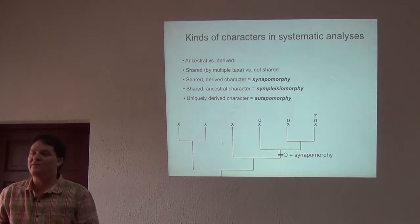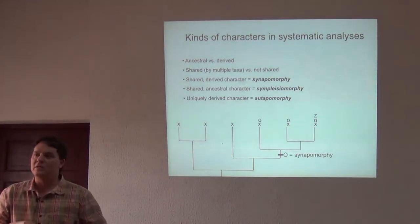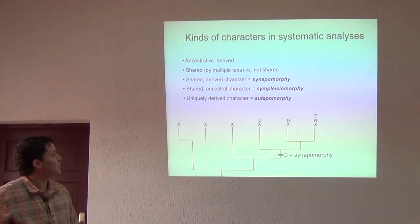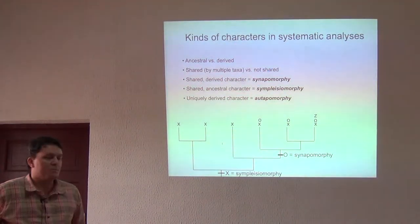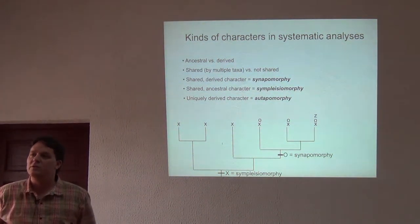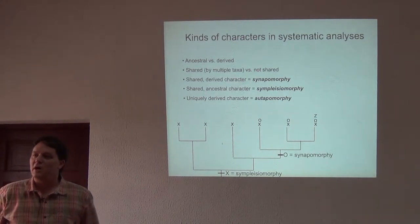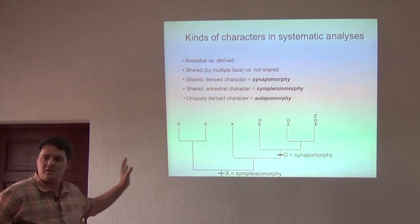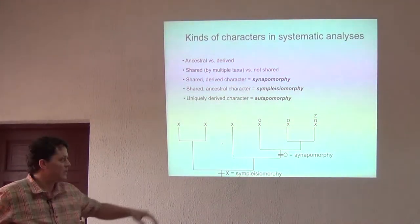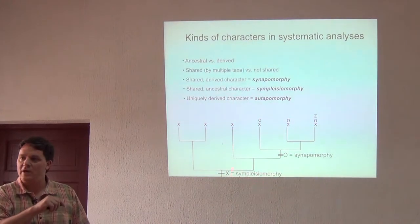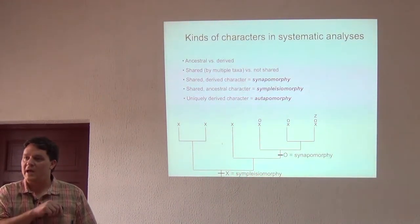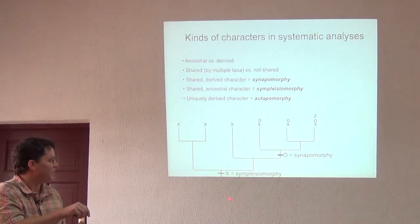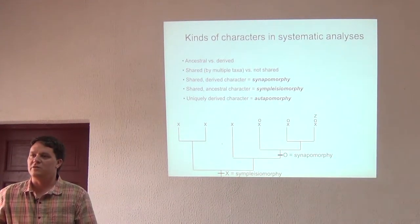O is a synapomorphy for these three species — a shared, derived character, meaning the big long tail evolved from an ancestor that didn't have it. The presence of feathers in this group of birds is what we refer to as a symplesiomorphy: a shared, ancestral character. It's the state that all the taxa in this clade have, meaning they got it from their ancestor. It's shared across all the taxa, but it's ancestral — it evolved deep in the evolutionary history of this group.